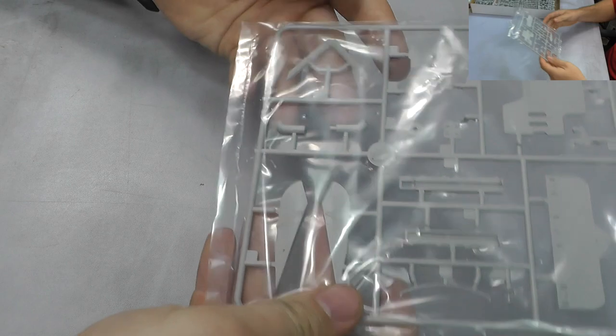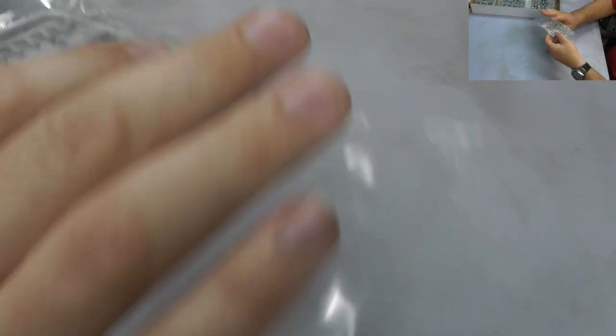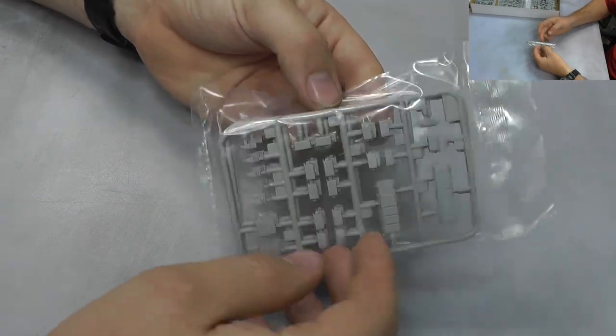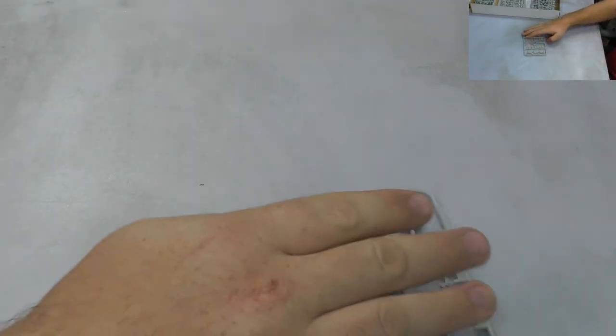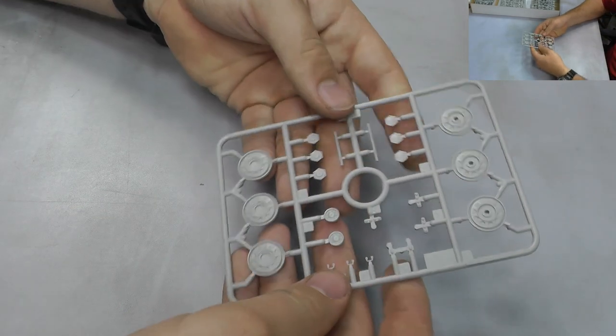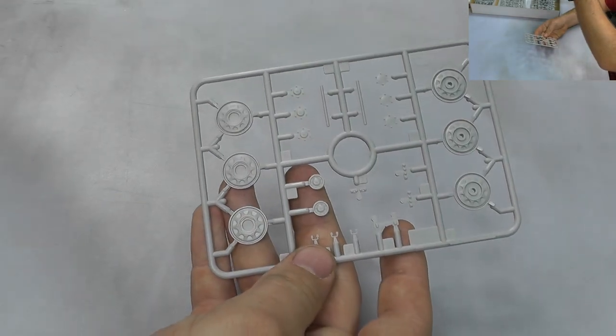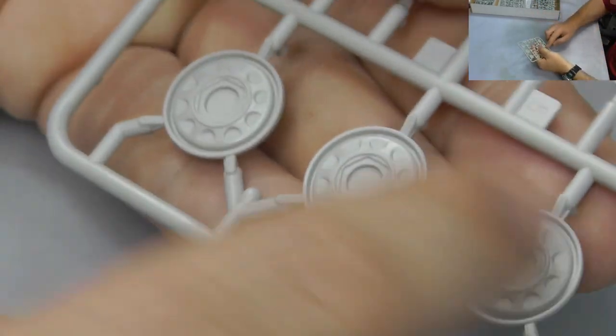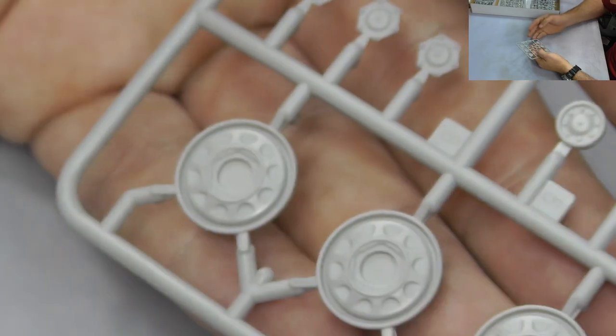Just some more sprues here, more reactive armor. Some road wheels here. I did get one of these out to show you. There's loads of, there's about five sprues of these road wheels because there's quite a few road wheels to get through. And bringing you in, as you can see, we've got some good detail, it is crisp.